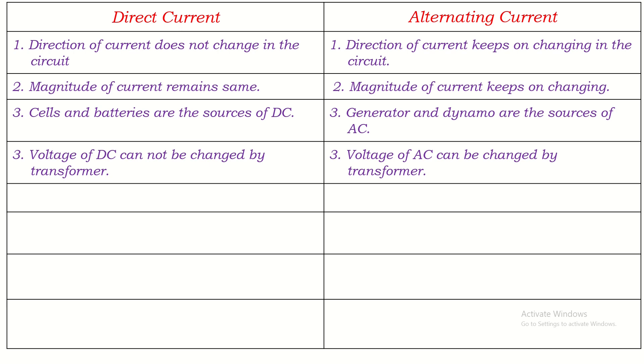This way, the voltage of alternating current can be increased or decreased according to the requirement. However, a transformer does not work with direct current — it cannot change the voltage of direct current.